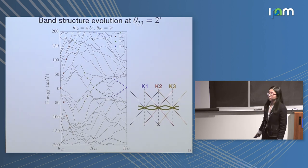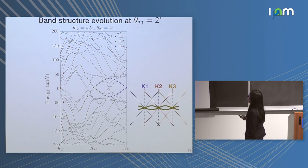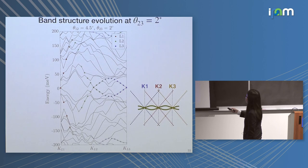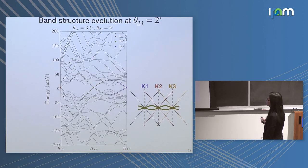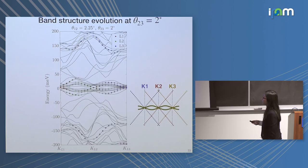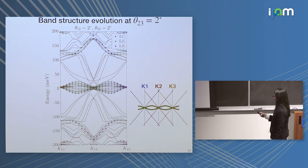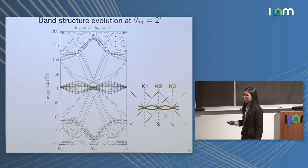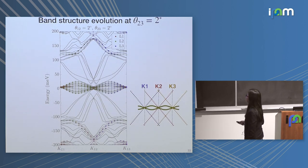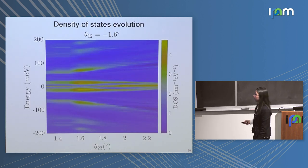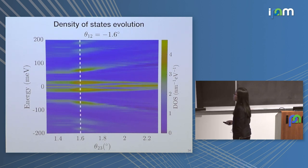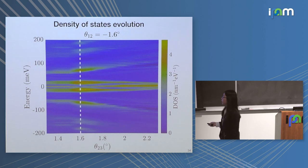We can also study the evolution of the band structure by keeping one twist angle fixed at two degrees and changing the other from large to small. As you decrease the twist angle, the middle bands get pushed closer and closer to the charge neutrality, and eventually all the bands are concentrated near zero energy. So this naive picture from the beginning actually agrees with our intuition reasonably well. We also studied the density of states evolution under the change of twist angle, keeping one twist angle fixed at 1.6 degrees. The white dashed line shows when the twist angles are equal.